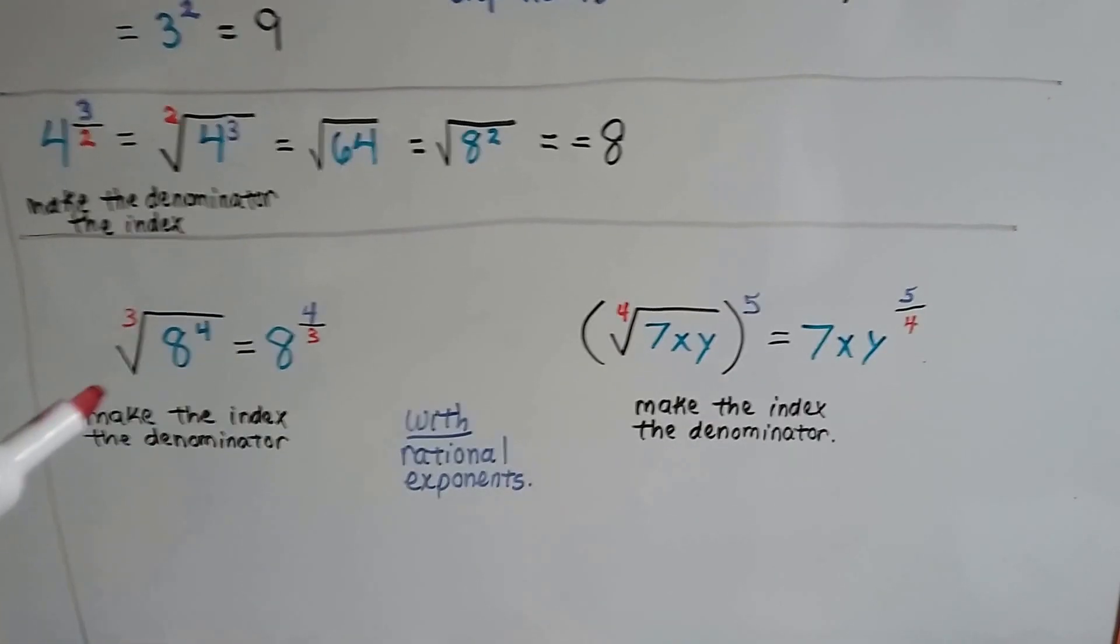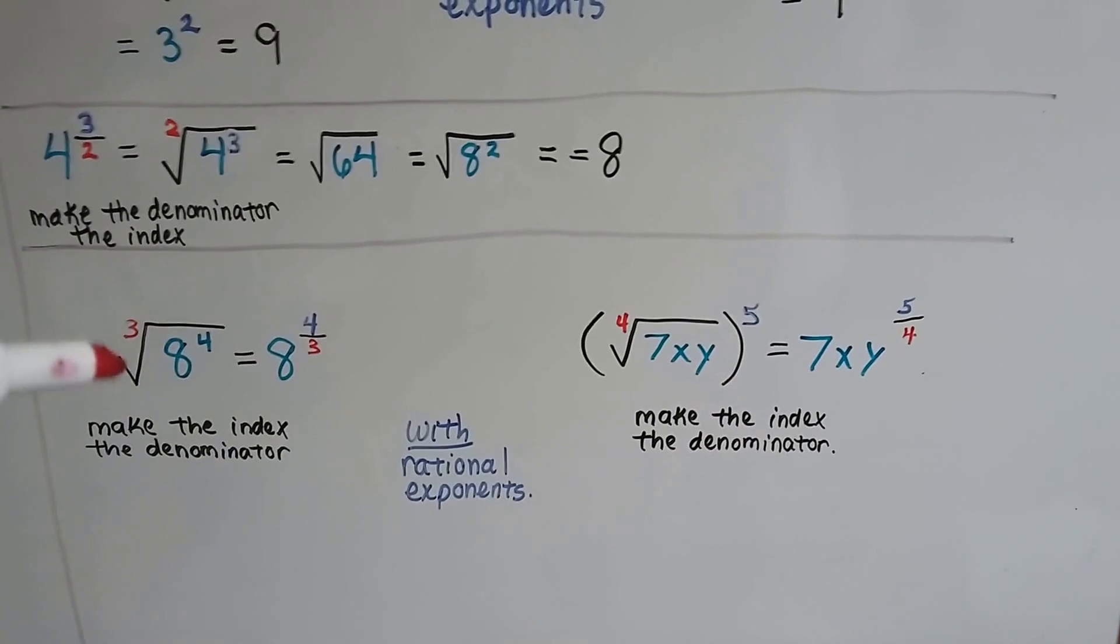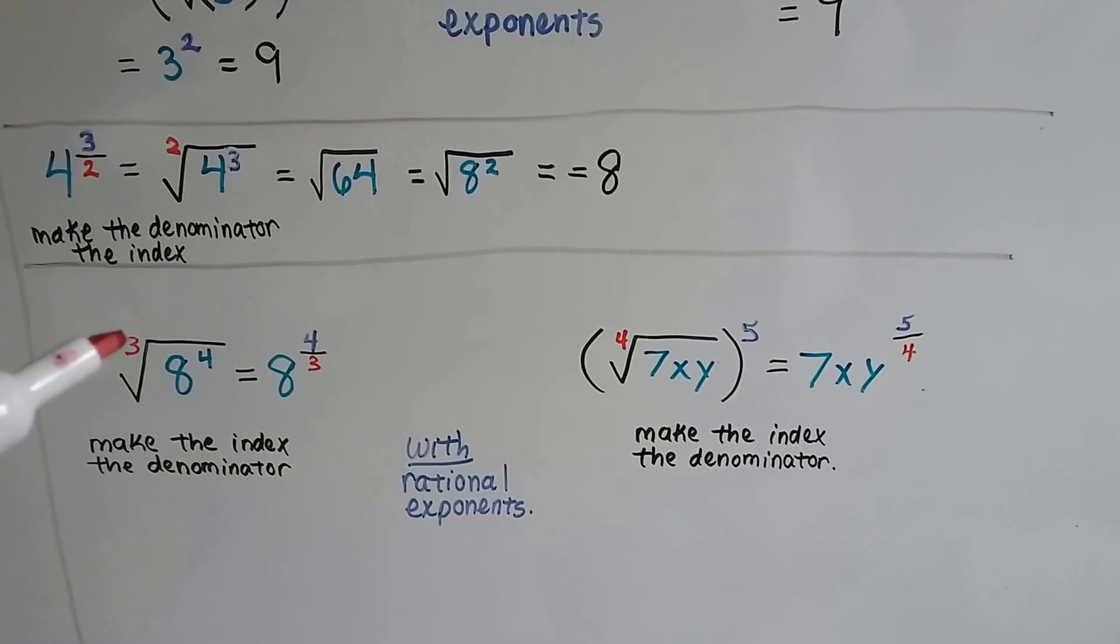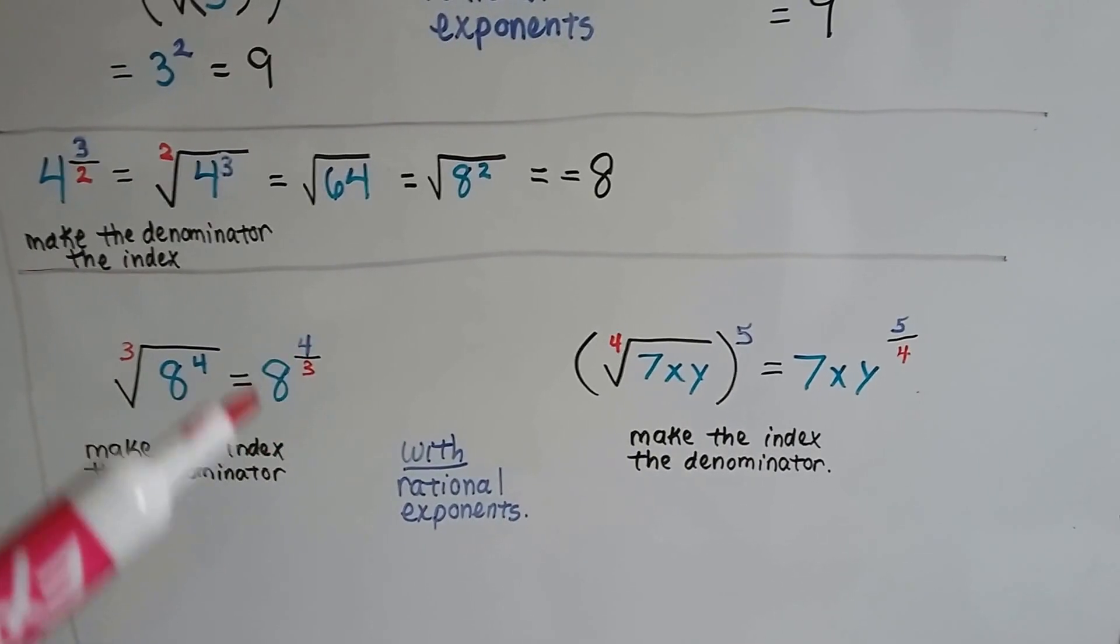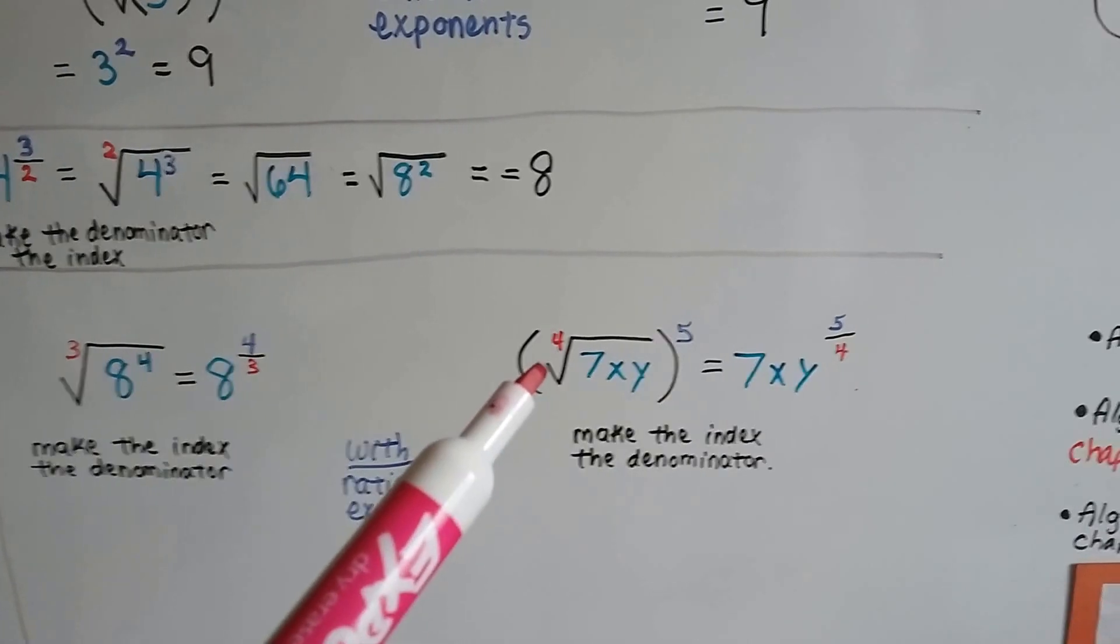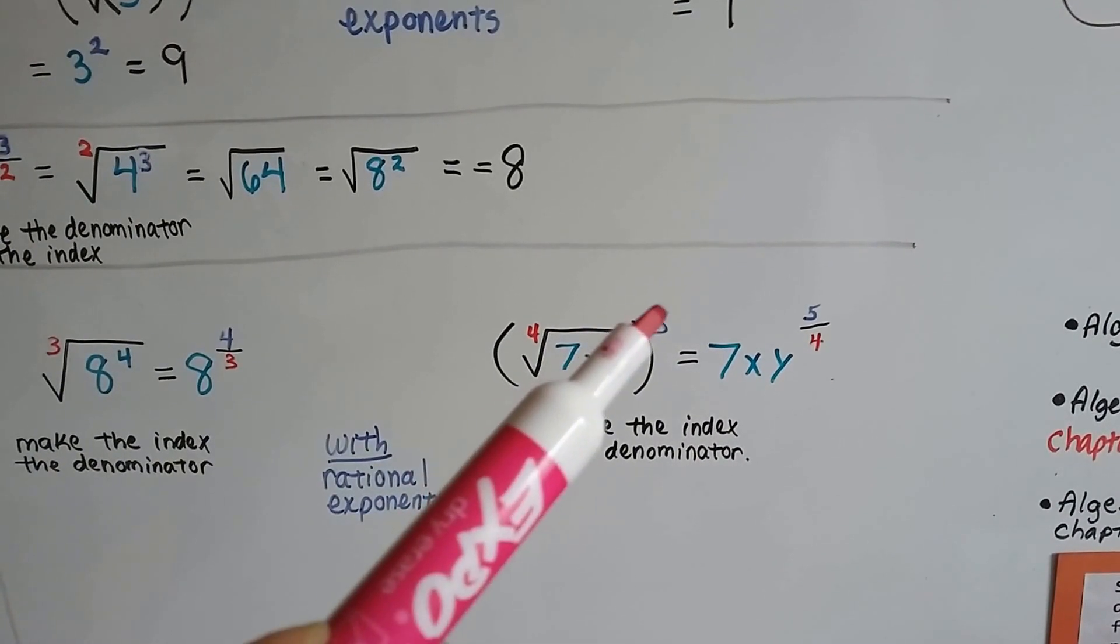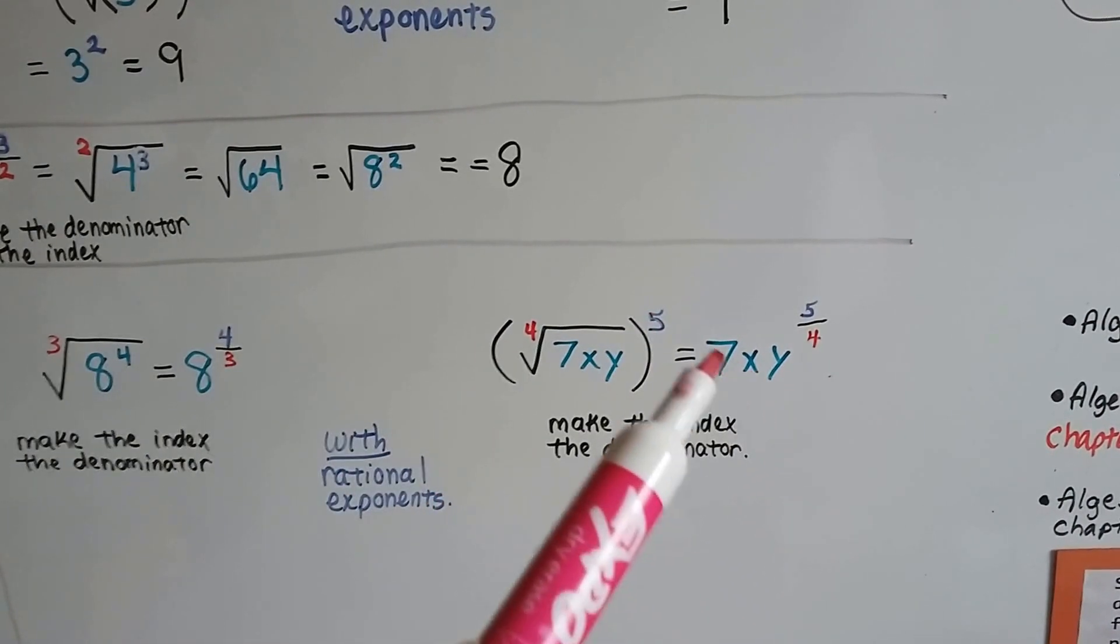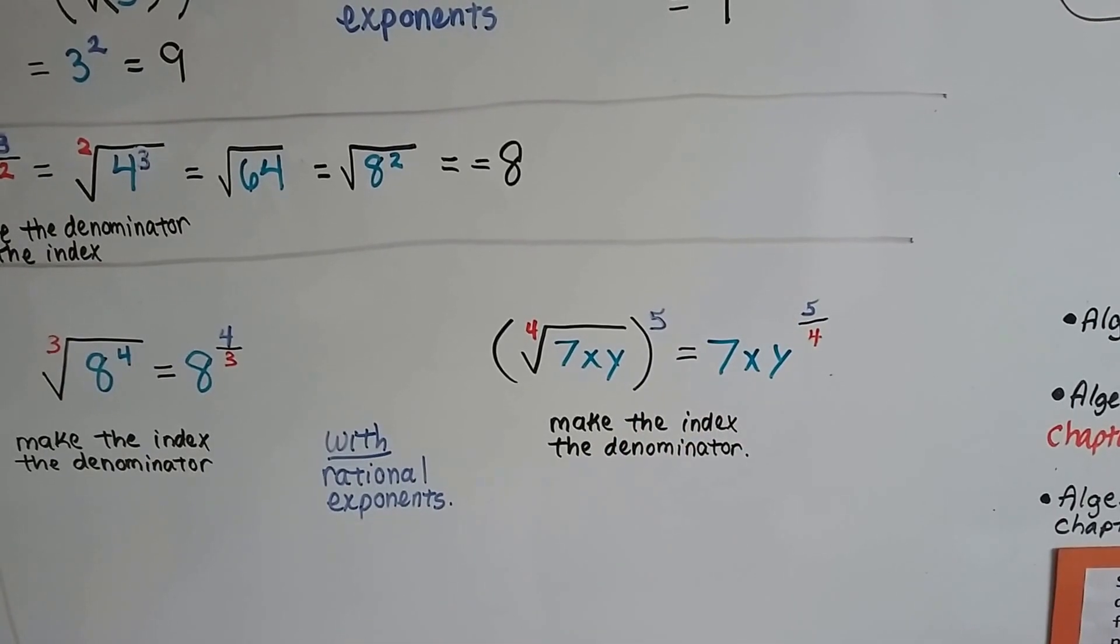We could do it with rational exponents and removing this radical sign. If we have the cube root of 8 to the 4th power, that's going to be our denominator, that's going to be our numerator. We have 8 to the 4 thirds power. If we've got the 4th root of 7xy to the 5th power, that's our denominator, that's our numerator. We can write it as 7xy to the 5 fourths power.